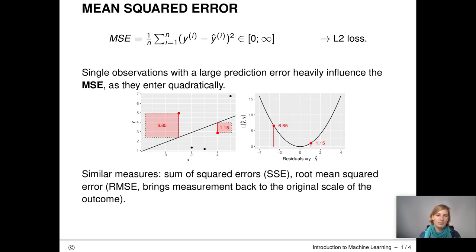As we take the squared error, single observations with a high prediction error can have a big influence on the MSE. We nicely see this here in the left plot. The contribution of this left red dot is much larger than of the other red dot, although the absolute error is less drastically larger.